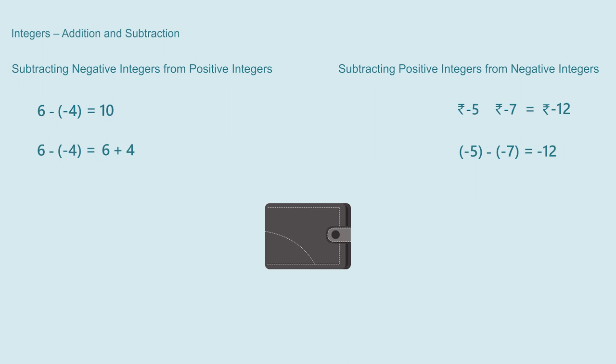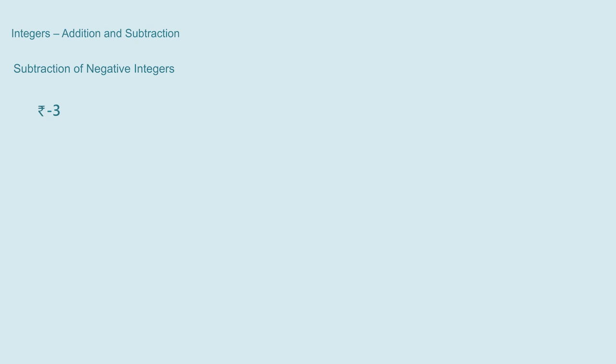Now only subtraction of a negative integer from a negative integer remains. If I have minus 3 rupees and I am going to give minus 6 rupees to my friend, giving minus 6 rupees to my friend means he will give me 6 rupees. Earlier I had minus 3 rupees so I owe 3 rupees, and to this I add the 6 rupees given by my friend, so I will have 3 rupees remaining. We write this as minus 3 minus minus 6 equal to 3, that is minus 3 minus minus 6 equal to minus 3 plus 6. The answer is an integer.